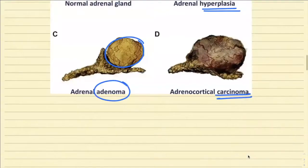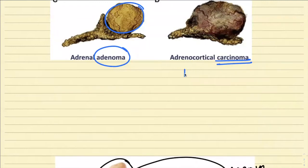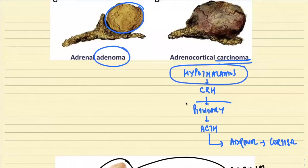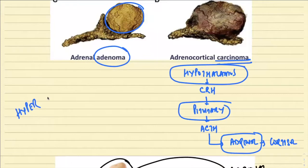Before delving into details, one basic concept: the hypothalamus releases corticotropin-releasing hormone (CRH), which acts on the pituitary and stimulates the anterior pituitary to release adrenocorticotropic hormone (ACTH). This ACTH acts on the adrenal glands to produce cortisol. This is the normal pathway of cortisol secretion. Today we are going to read about hyperadrenalism — conditions of increased secretion of cortisol.